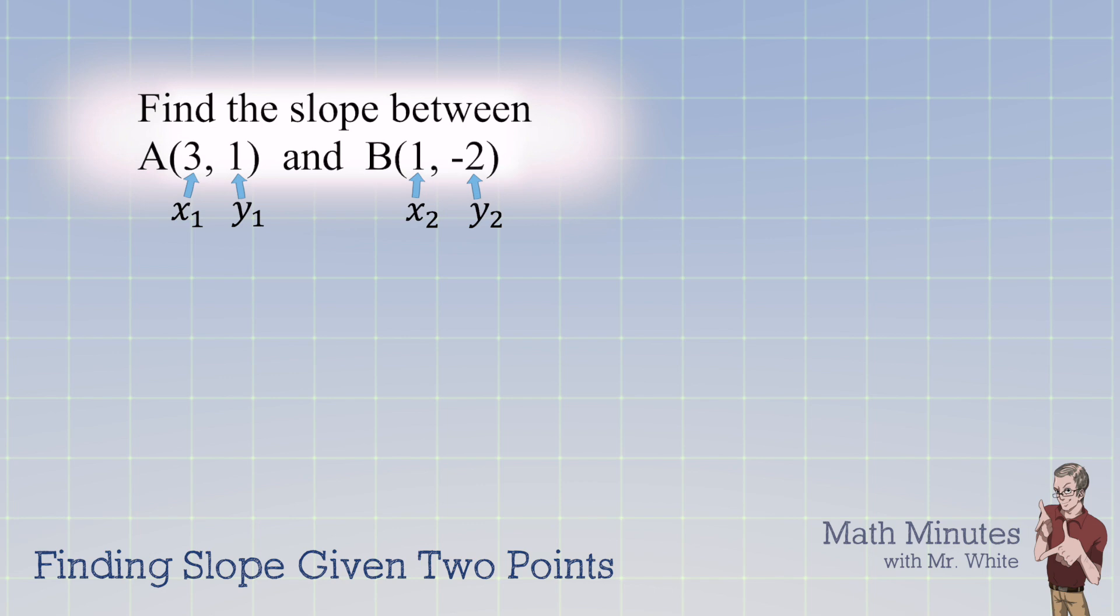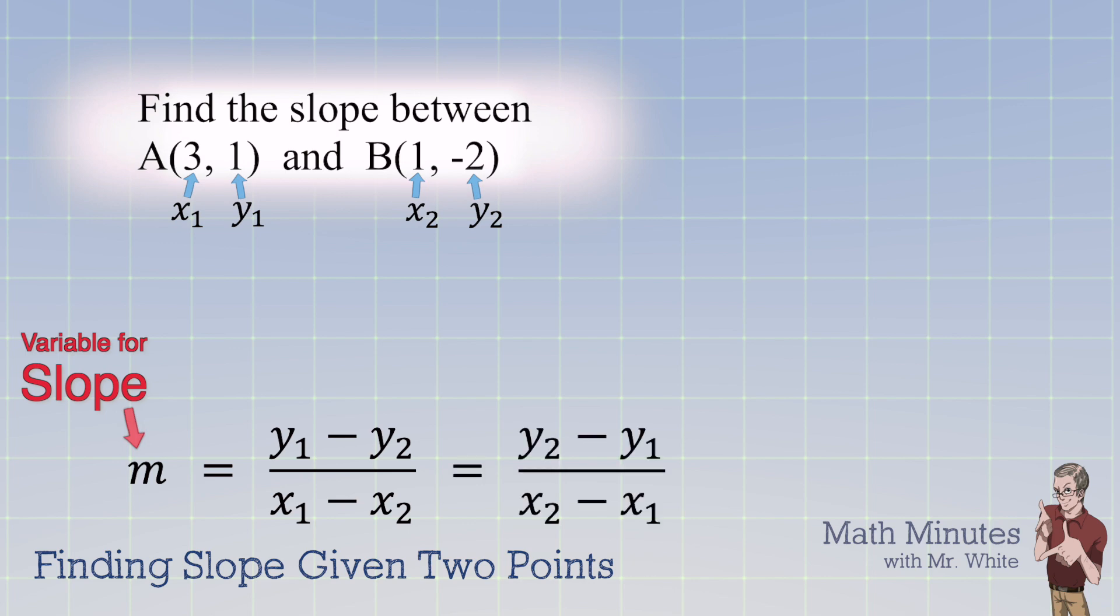And in order to find the rise, in order to find the run, we're going to simply subtract the coordinates. So the slope formula is y1 minus y2, all divided by x1 minus x2. Now, of course, you can reverse those and do y2 minus y1 over x2 minus x1, and you're going to get the same answer.